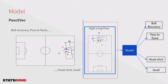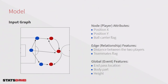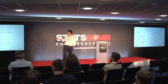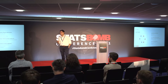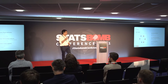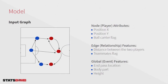How are we going to represent our input data to fit our model? I'm going to create a graph for each action. Vector nodes represent players. Edges represent relationships between players. We also have global features describing how the action occurs. At node level, we have features like player position and a flag indicating if the player is the ball carrier. In edge features, we have distance between players and a flag indicating if the two connected players are teammates. In global features, we have things like the end location of the pass, the body part used to execute it, and the height of the pass.